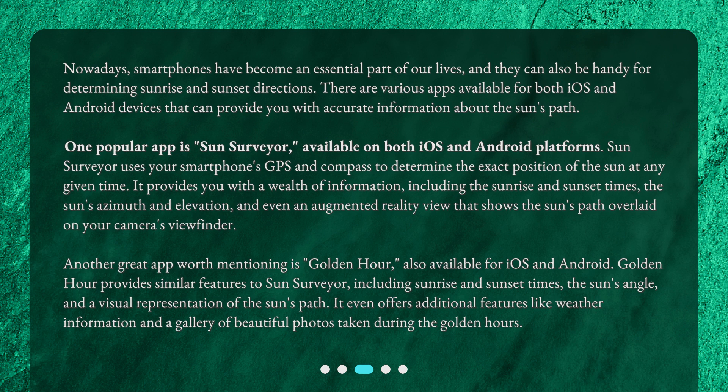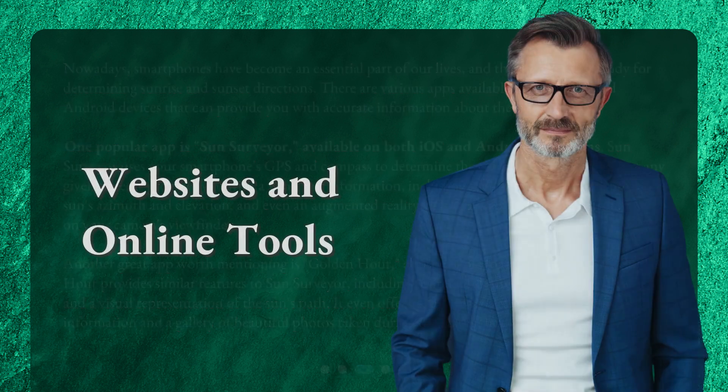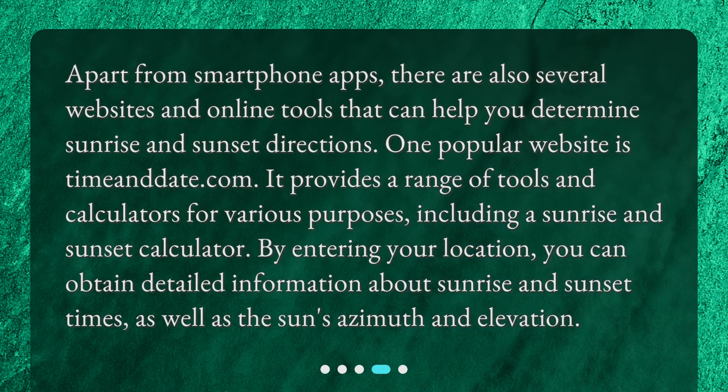Golden Hour provides similar features to Sun Surveyor, including sunrise and sunset times, the sun's angle, and a visual representation of the sun's path. It even offers additional features like weather information and a gallery of beautiful photos taken during the golden hours.